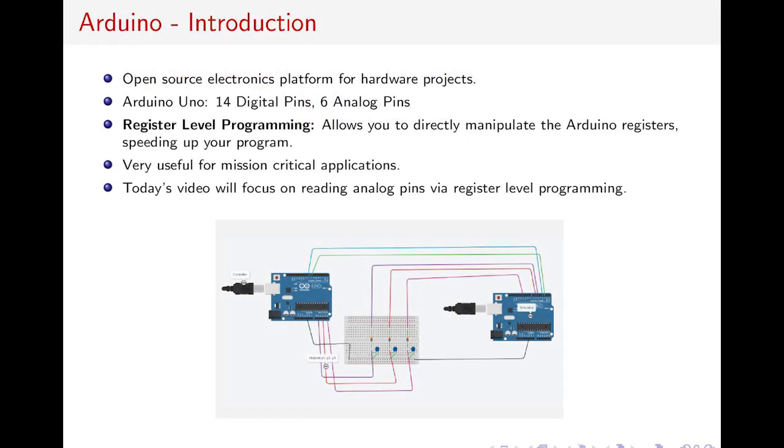You can build sensors, temperature scanners, anything you want. The Arduino Uno is what we'll be focusing on. It has 14 digital pins and 6 analog pins. There is something called register level programming or machine level programming, which allows you to manipulate the Arduino registers directly and makes your program much faster. It's very useful for applications where you have to directly access the Arduino ports with only microseconds of time to work with. Today's video will be focusing on reading multiple analog pins.